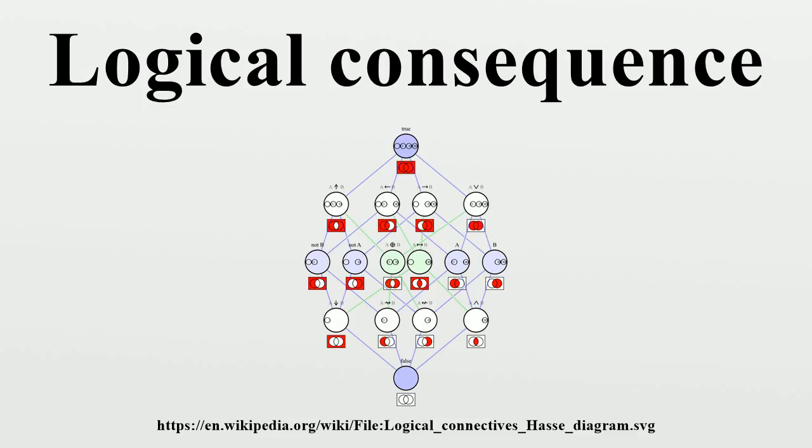This is in contrast to an argument like: Fred is Mike's brother's son, therefore Fred is Mike's nephew. Since this argument depends on the meanings of the words brother, son, and nephew, the statement Fred is Mike's nephew is a so-called material consequence of Fred is Mike's brother's son, not a formal consequence.